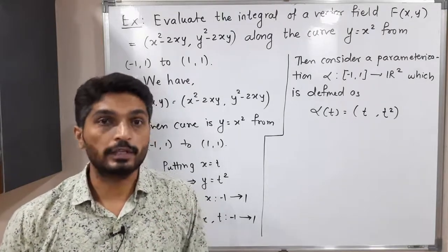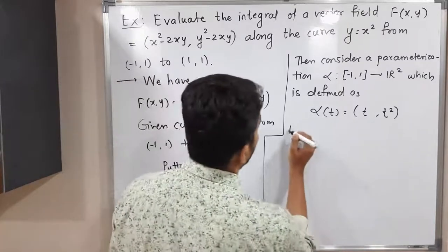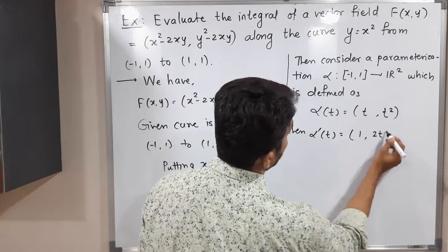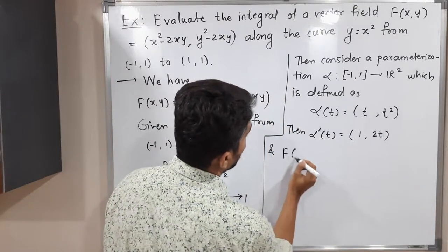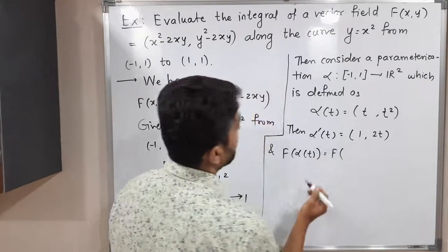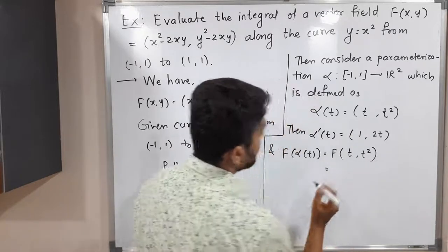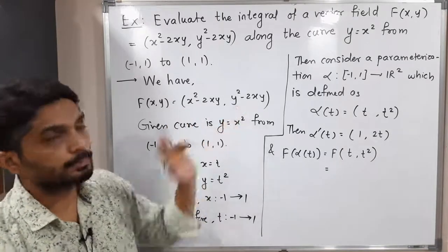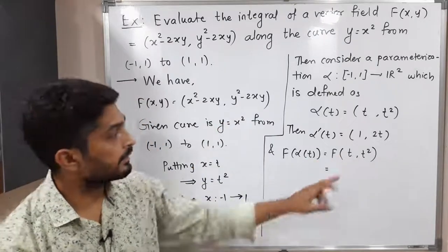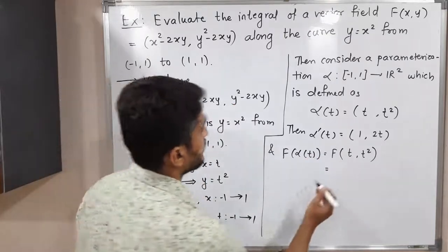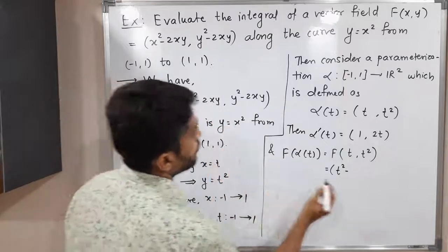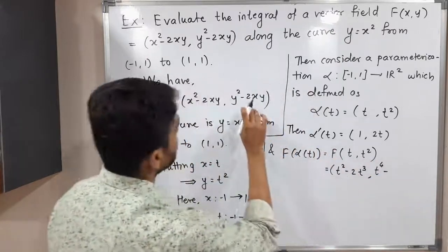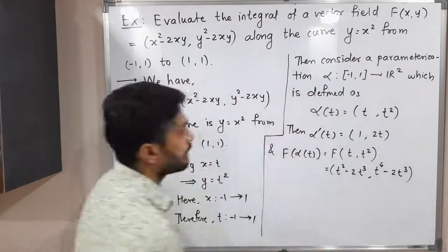We want α'(t) and f(α(t)). For α'(t), we take the derivative of each component: derivative of t is 1, derivative of t² is 2t, so α'(t) = (1, 2t). For f(α(t)), substituting x = t and y = t² into f gives f(α(t)) = (t² − 2t³, t⁴ − 2t³).